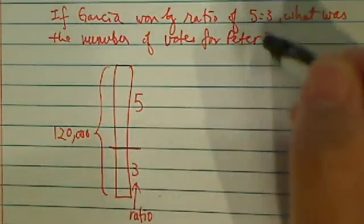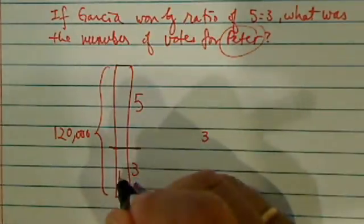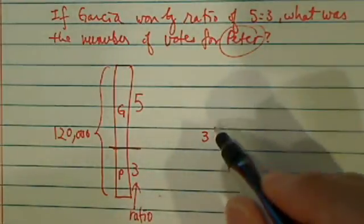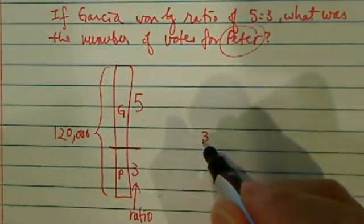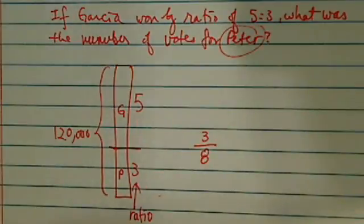So since we're looking for a ratio of Peter, and Peter has 3, let's put Peter here and Garcia here because Garcia won the election.